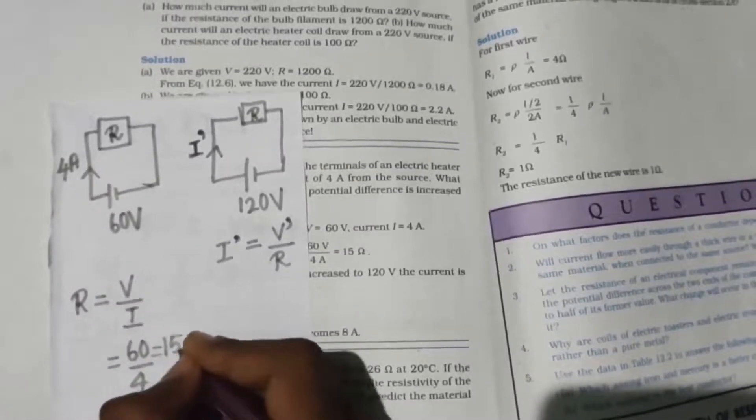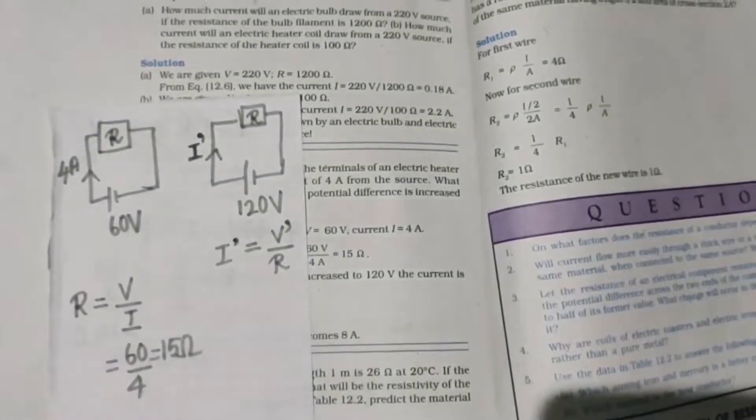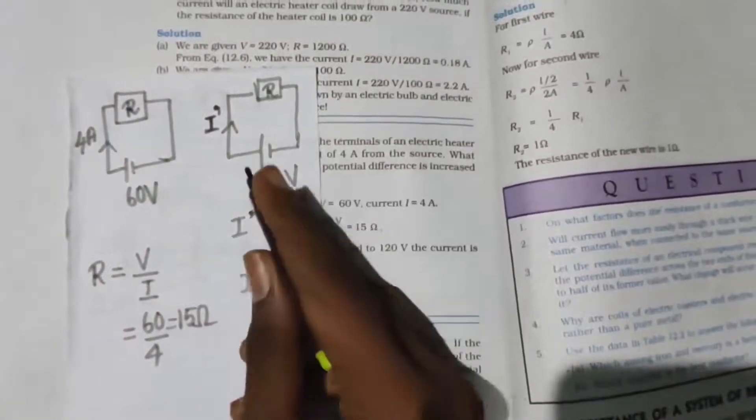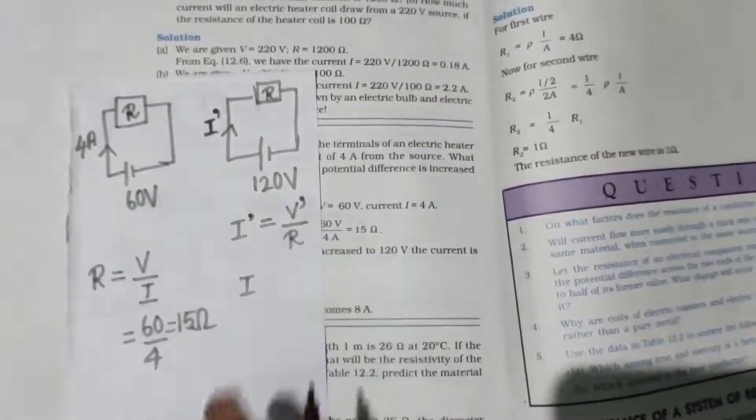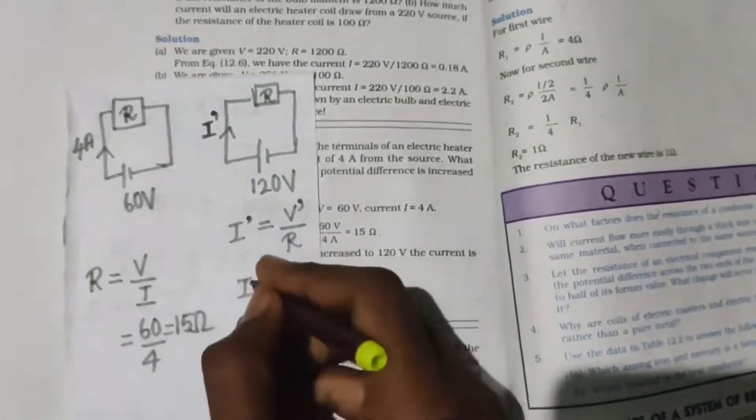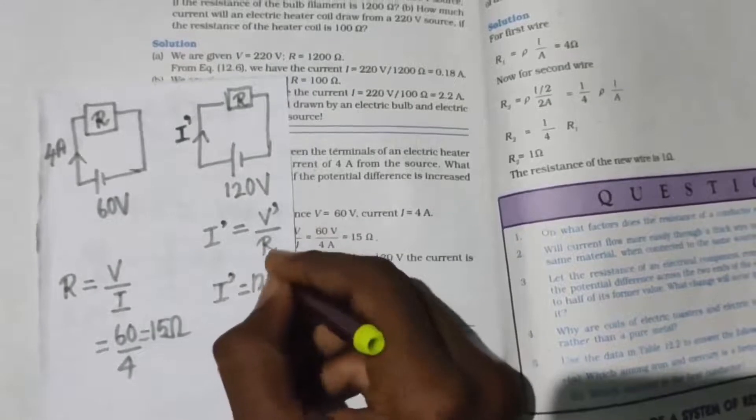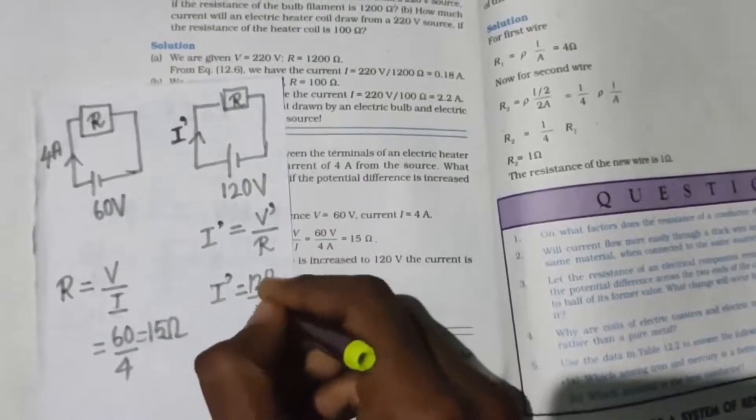Then you will be able to find the current that it draws when you increase the voltage to 120 volts. So I dash now is 120 upon 15. How much is it, kids? It is 8.